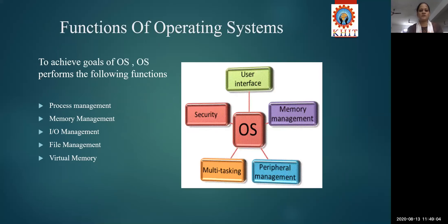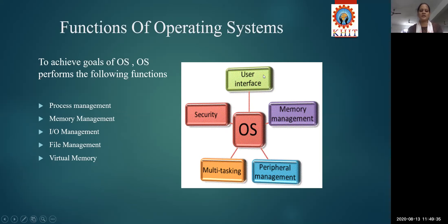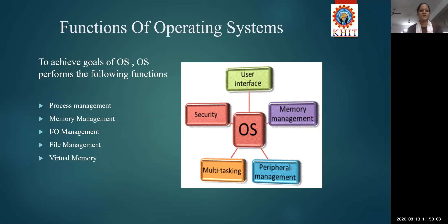To fulfill these goals, some functions need to be performed by the operating system. Those functions are: process management, user interface, memory management, I/O management, file management, and virtual memory. The user interface determines in which platform we provide the environment to the user — whether command line interface or graphical user interface — depending on the type of operating system. Among all these functions, the major and most important ones are process management and memory management.